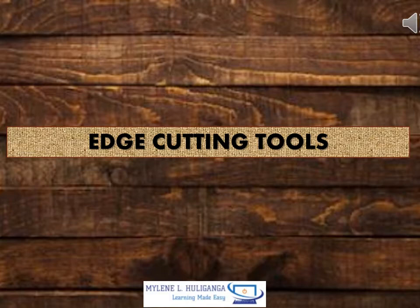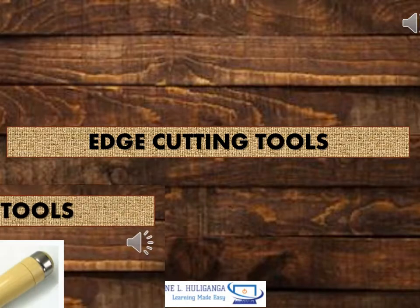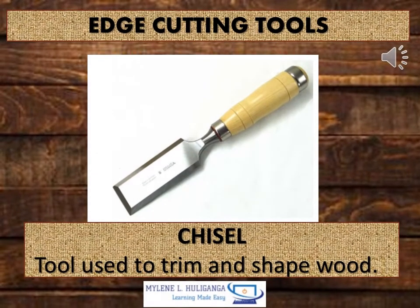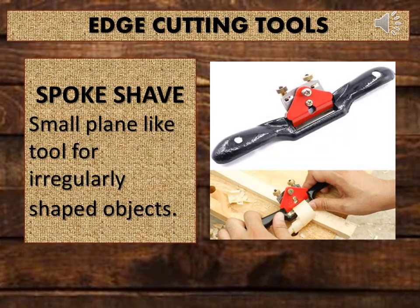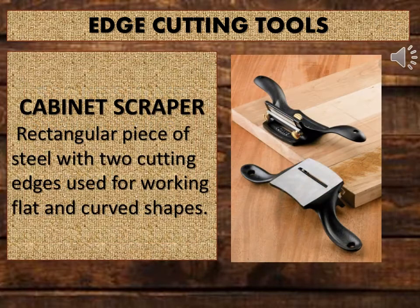The following are the edge cutting tools. Chisel: a tool used to trim and shape wood. Spokeshave: a small plane-like tool for irregularly shaped objects. Cabinet scraper: a rectangular piece of steel with two cutting edges used for working flat and curved shapes.